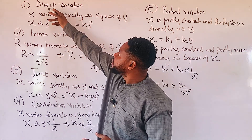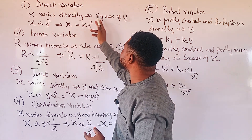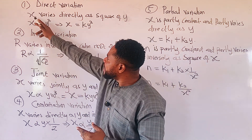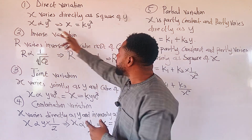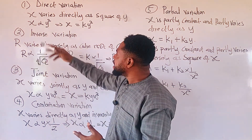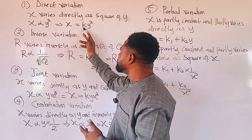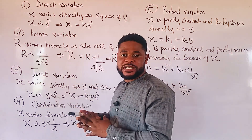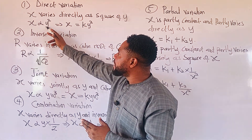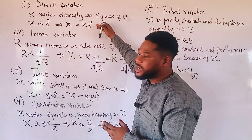We have what we call direct variation. When we say x varies directly as the square of y, we join x and square of y with our variation sign. The next step is that we change this variation sign to an equal sign, then we introduce our constant of proportionality, which is k, which multiplies our variable on the right-hand side, as we can see here.